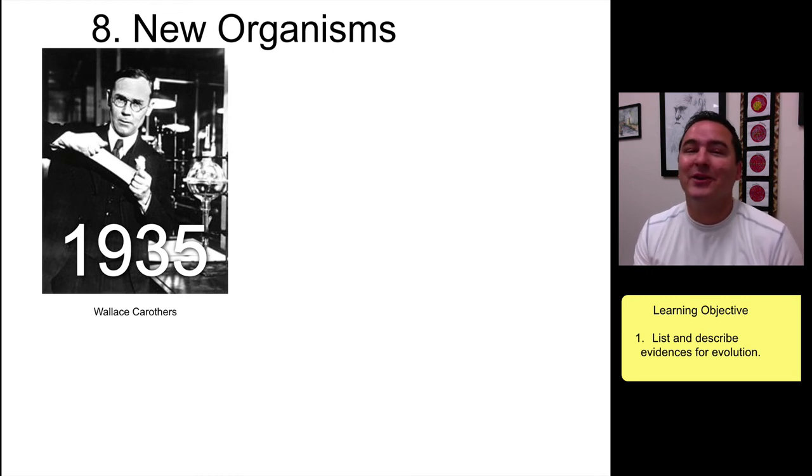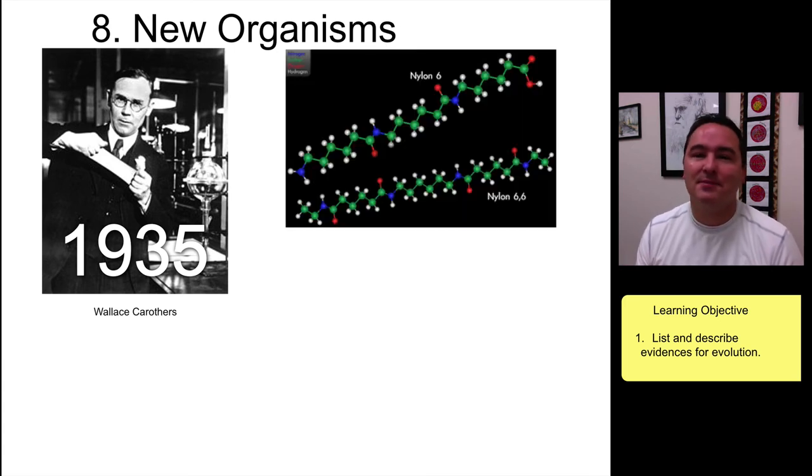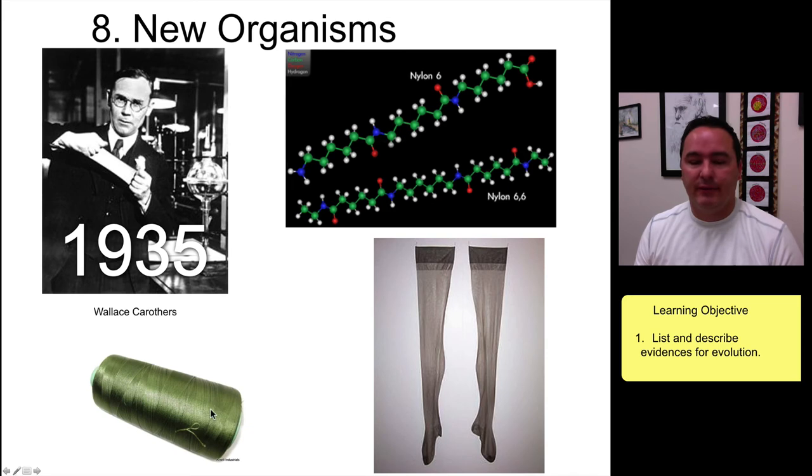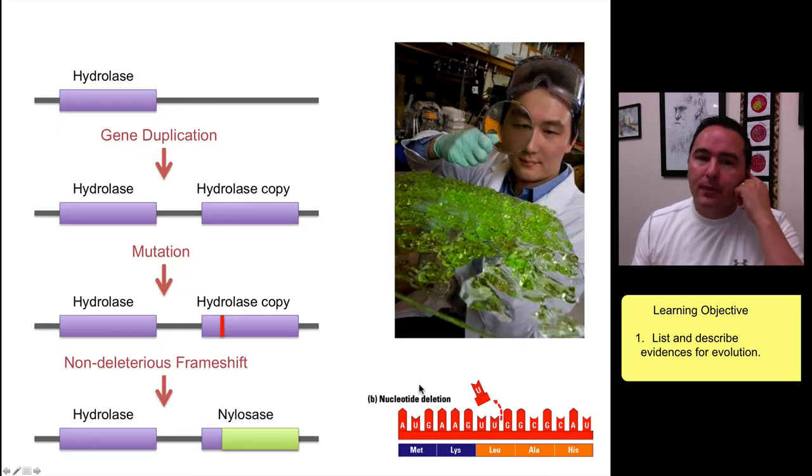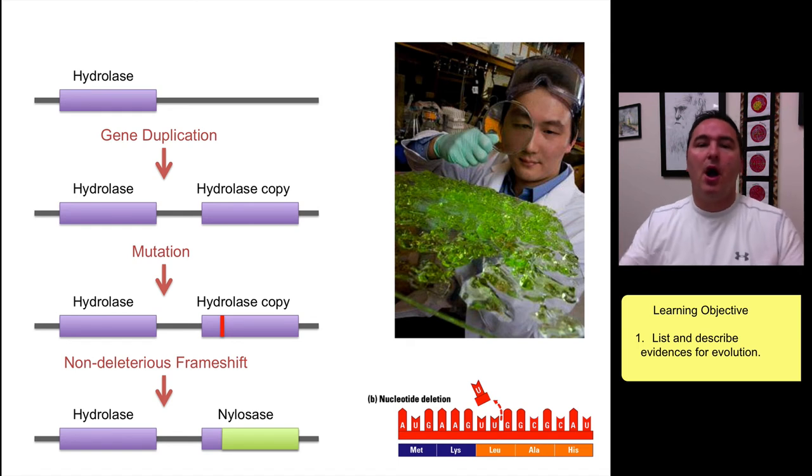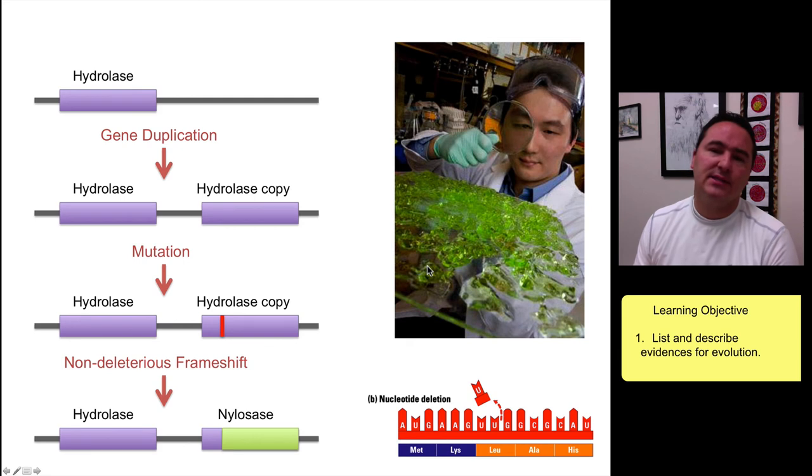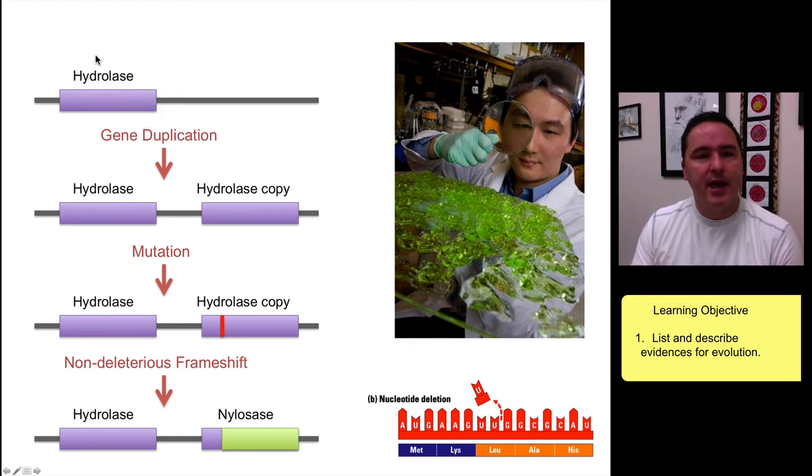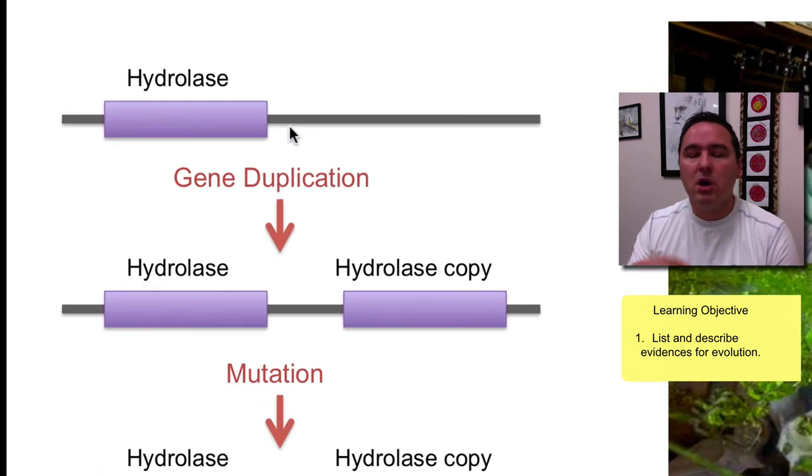Number eight: new organisms. A powerful evidence for evolution is the fact that new organisms are appearing on the planet all the time. Here's a really fun example: in 1935, Wallace Carothers invented a new synthetic substance never before seen on planet Earth called nylon. Outside of one of the factories there was this pond, and over time there was this growth of bacteria. Some scientists looked at this bacteria and it was doing things a little bit different than other bacteria.